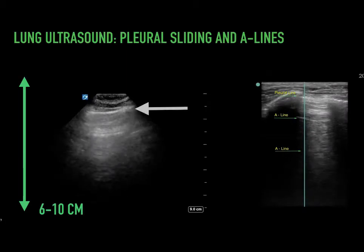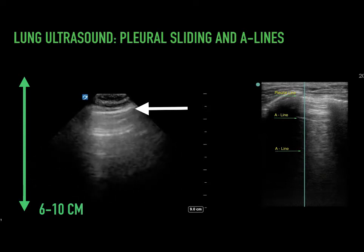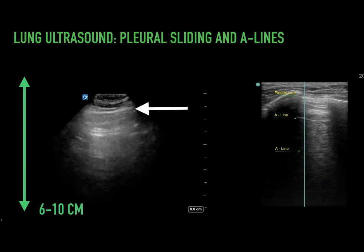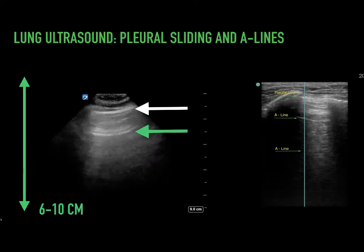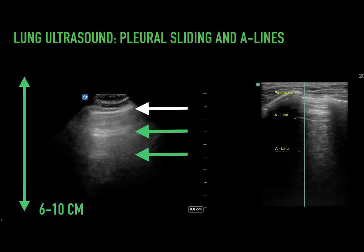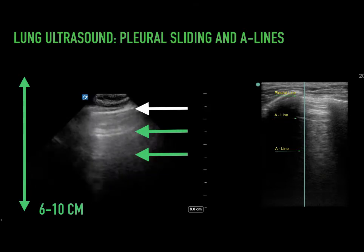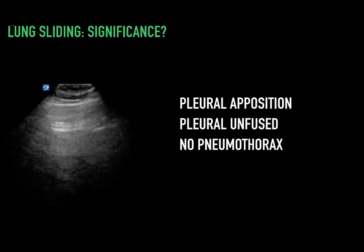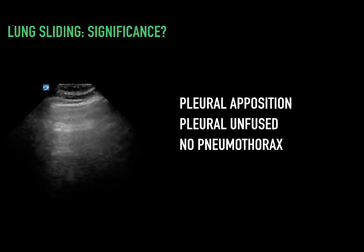In lung ultrasound, we commonly talk about lung sliding. This white arrow is pointing to the area where we see sliding. This means that the parietal and visceral pleura are abutting and they're sliding — you see this scintillating hyperechoic line that goes back and forth. The green arrow is pointing to what's commonly called an A line, a reverberation or duplication artifact of the pleural line to the probe. This is due to a tissue-air interface and reflects normal parenchyma beneath, meaning the pleura is apposed and there's no pneumothorax.